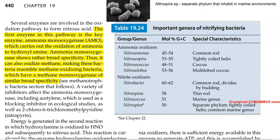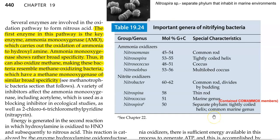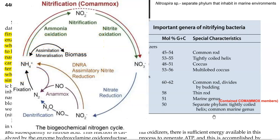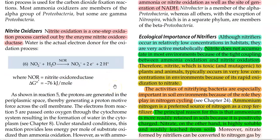The important groups of nitrifying bacteria are listed here. The first group comprises ammonia oxidizers; important organisms include Nitrosomonas, Nitrosospira, and Nitrosolobus. The second group is the nitrite oxidizers, with the important organism being Nitrobacter. Finally, there is the genus Nitrospira, which belongs to the separate phylum Nitrospira. This phylum mainly contains the comammox group of organisms, which are capable of performing the whole process in a single step — from ammonia to nitrate — rather than requiring two different groups.